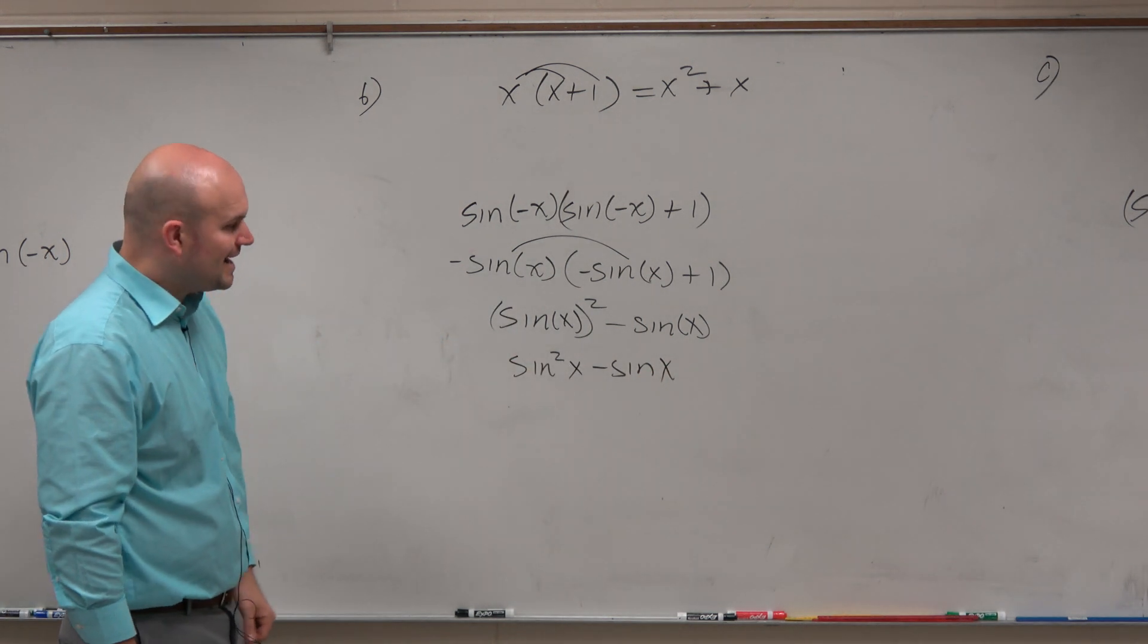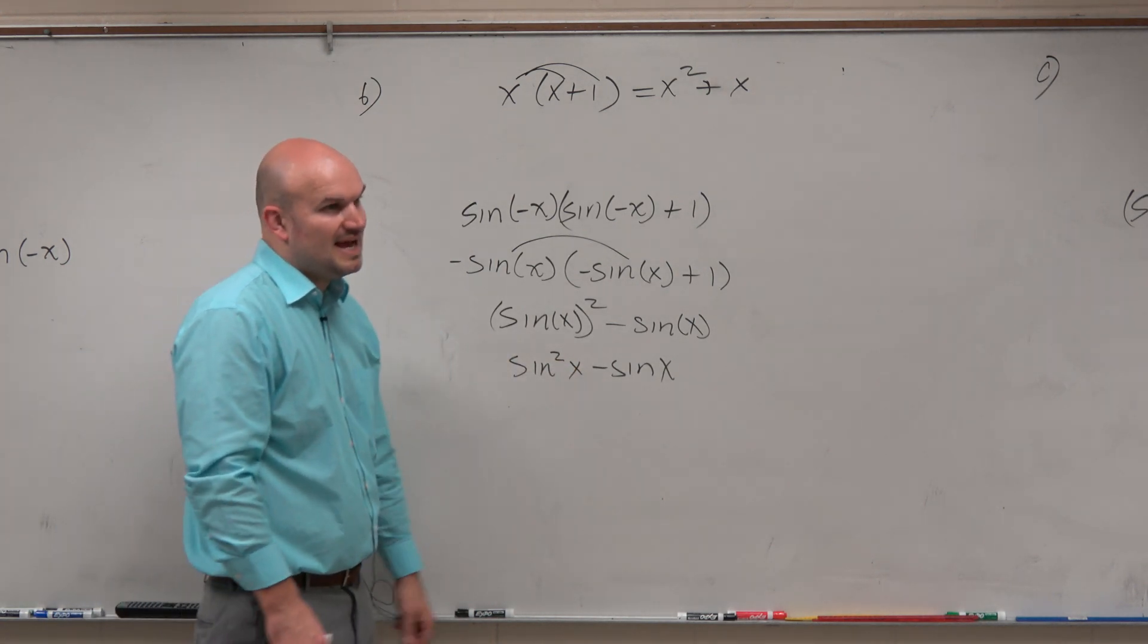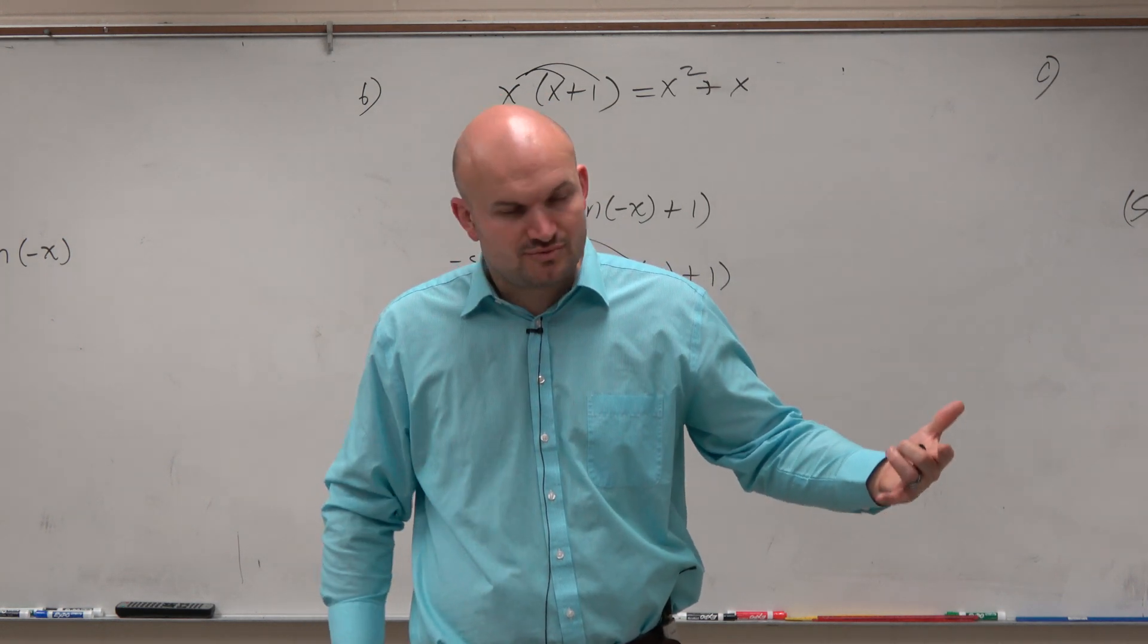You can put the square right outside of the sine. Just do not put the squaring with the x, because that means you're squaring the x, the angle of sine, which we're not doing.